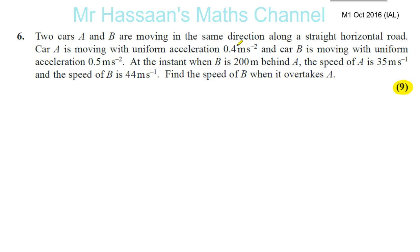Two cars A and B are moving in the same direction along a straight horizontal road. Car A is moving with uniform acceleration. These are some of the key words that will help you understand what to do. Uniform acceleration — that's when we can use the SUVAT equations, the equations of motion: s = ut + ½at², v = u + at, and so on.